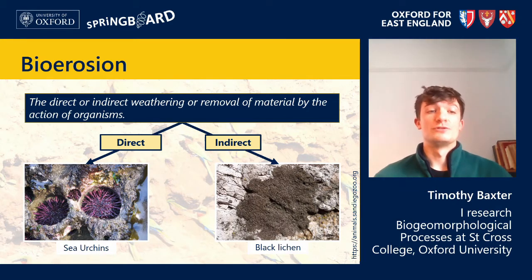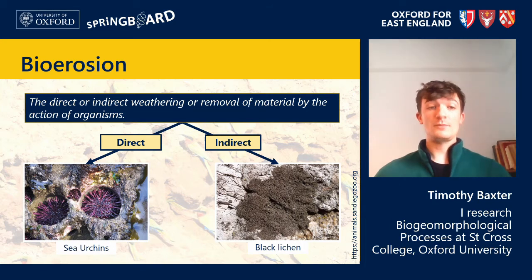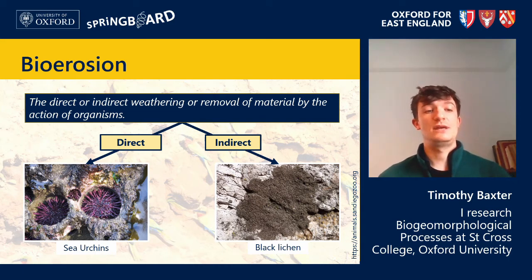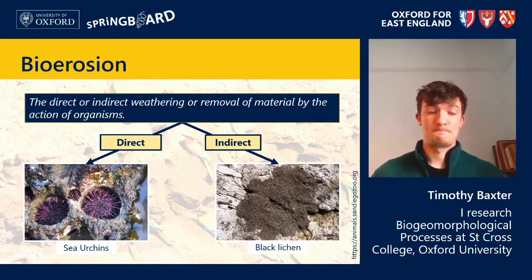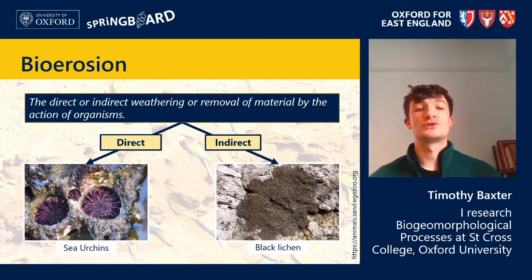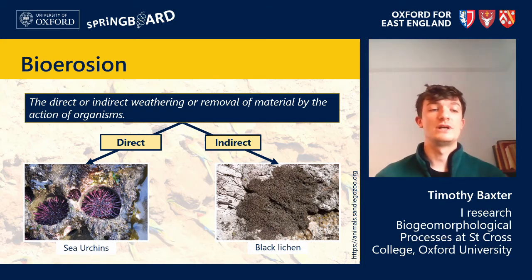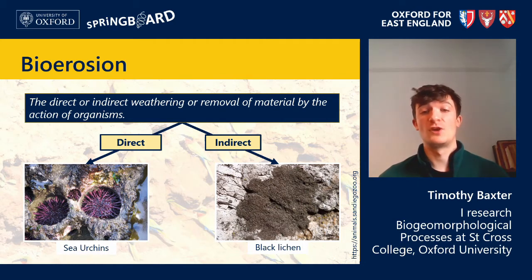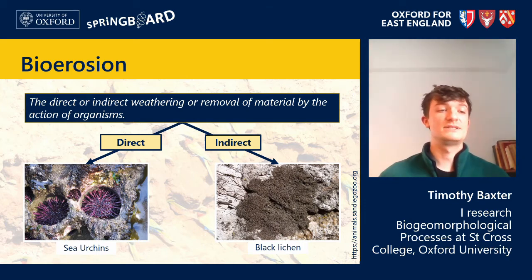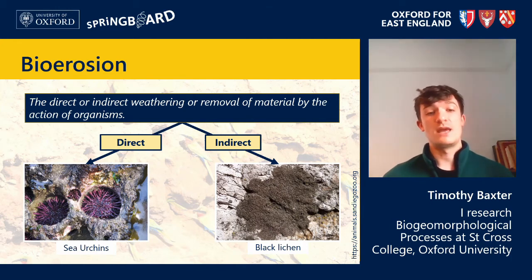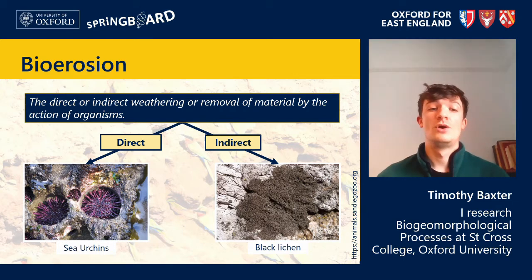In addition to direct bio-erosion, organisms can contribute to the breakdown of material through passive means, or indirect bio-erosion. Indirect bio-erosion reduces the level of protection from other erosive processes, thus indirectly facilitating the deterioration or transport of material and sediment. Examples include when animals consume vast amounts of vegetation which would otherwise bind sediment together, making it more susceptible to erosion from flowing water. Another example is when darkly coloured lichens increase the surface temperature of rock, enhancing weathering processes and thus increasing the rate of rock breakdown.